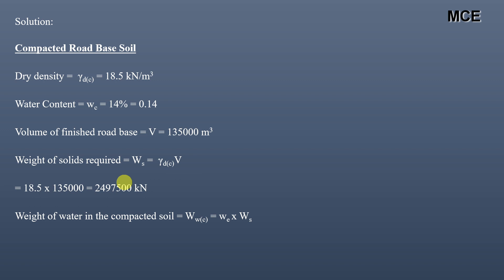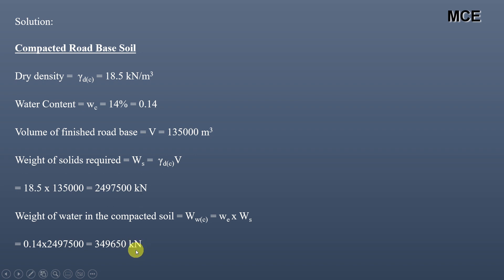The weight of water in the compacted soil equals the water content of the compacted soil multiplied by the weight of solids required: 0.14 × 24,975,000 = 3,496,500 kN.